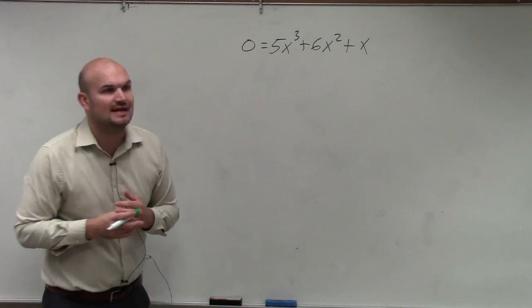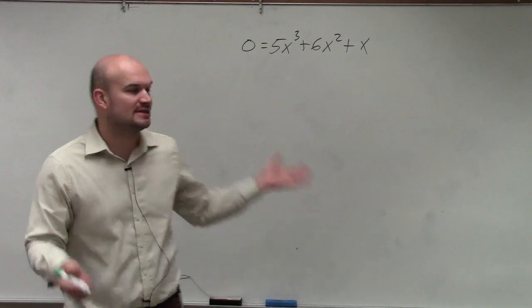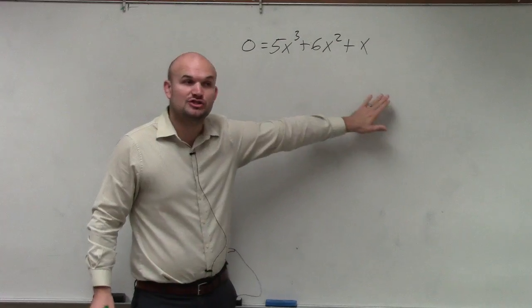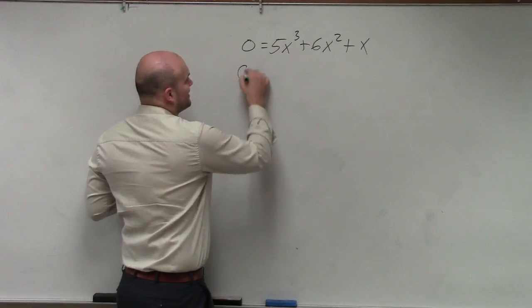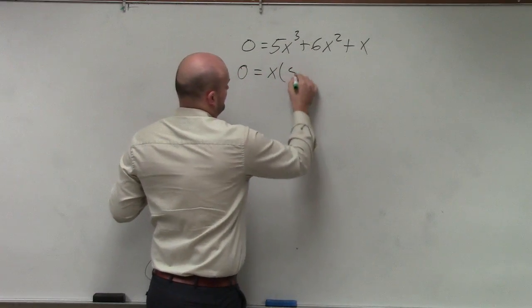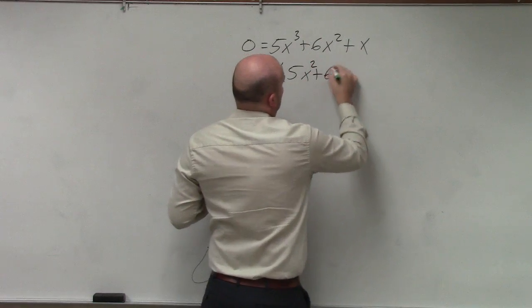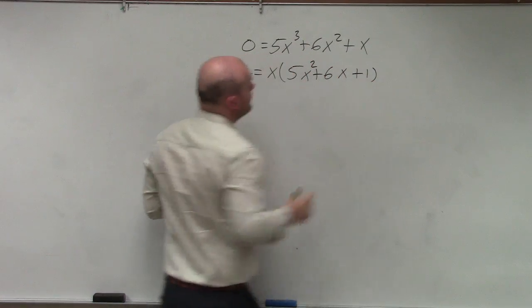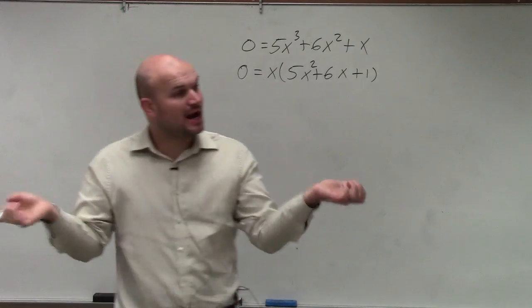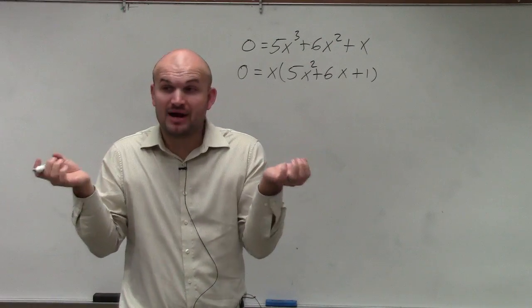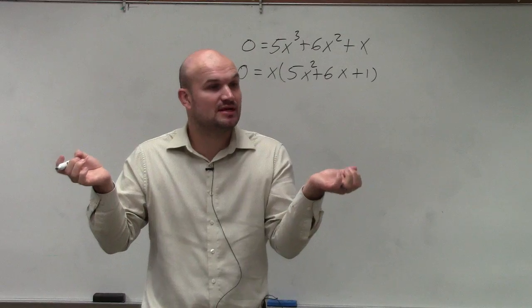The next step was to factor out any common terms. So is there any terms that they all have in common? You can see that they all share an x. So I can factor out an x. Now I have the product of two polynomials equal to 0.